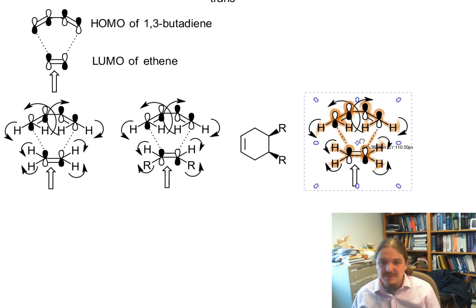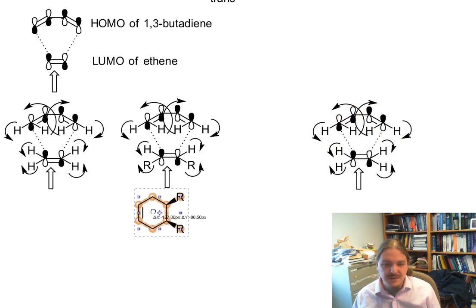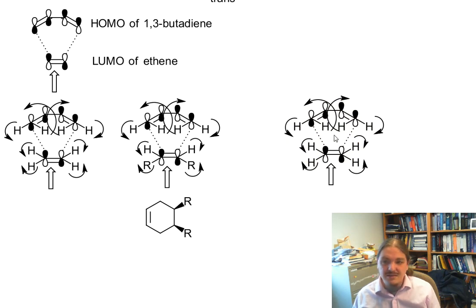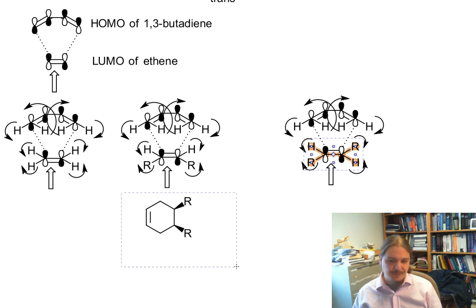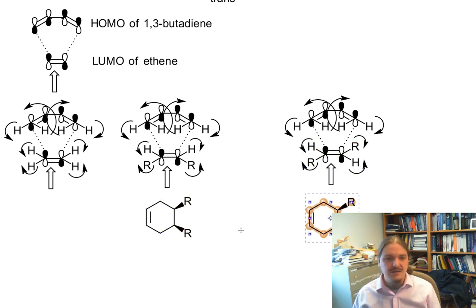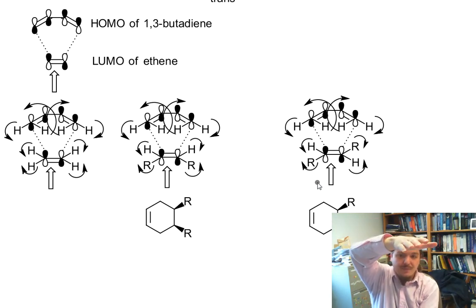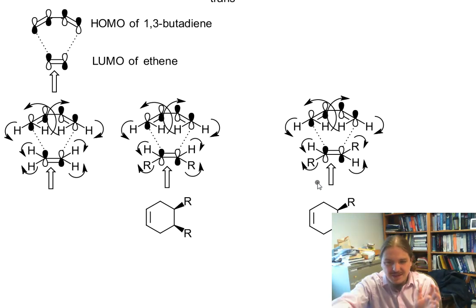If instead we had trans on our dienophile, then one would be rotating down and the other would be rotating up, and that would generate the other kind of stereochemical outcome. In one case you would get one enantiomer. If the dienophile came from the bottom and the diene from the top, you flip it over and you get the other one, or you rotate the diene—there are other ways to get to the other enantiomer.